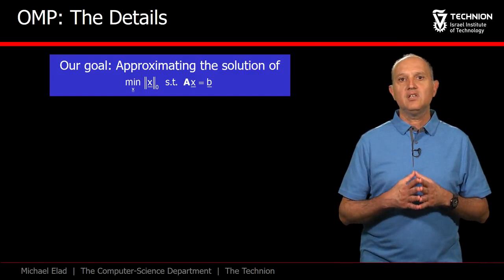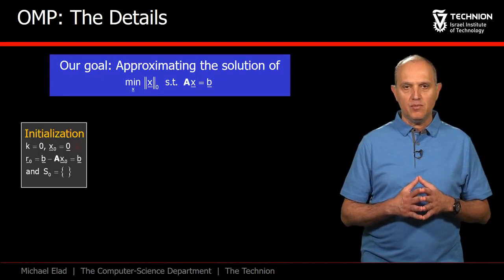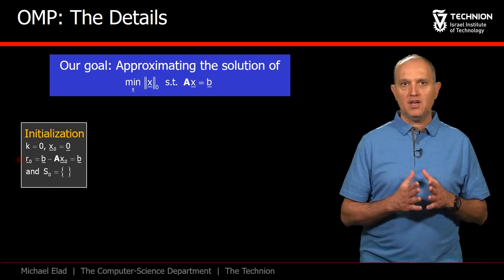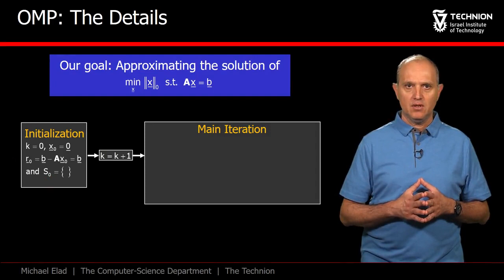And now to a detailed description of the OMP. In the initialization, we set k to be 0, x0 to be 0, the support S0 to be empty. The residual is the vector B.